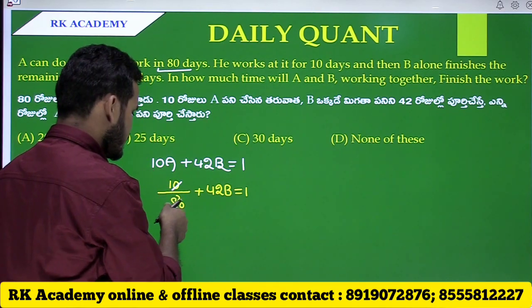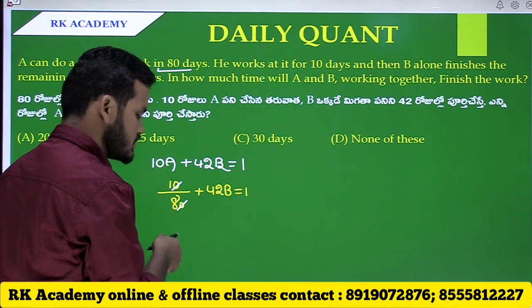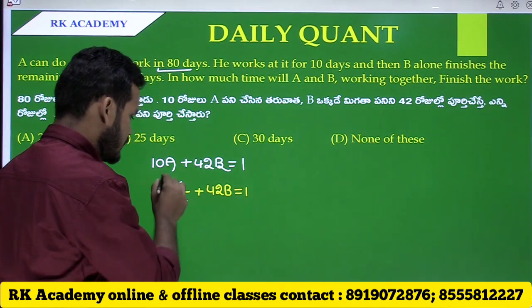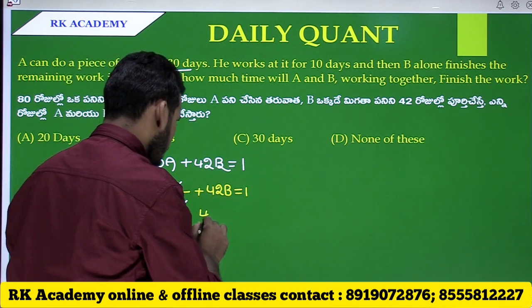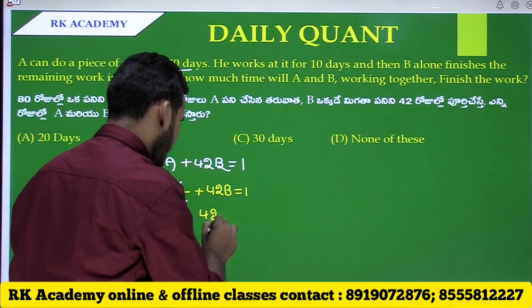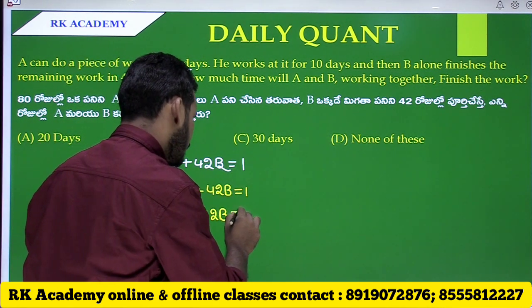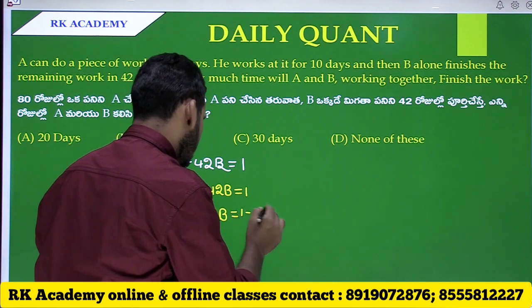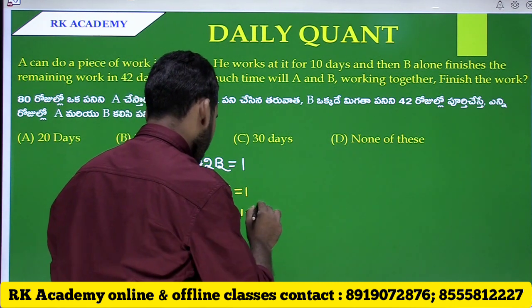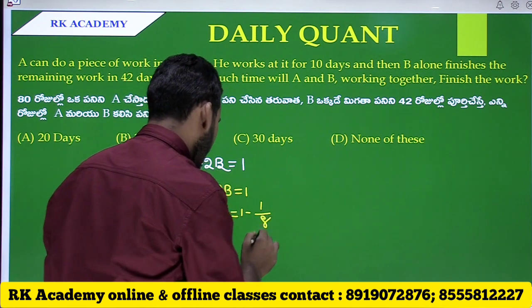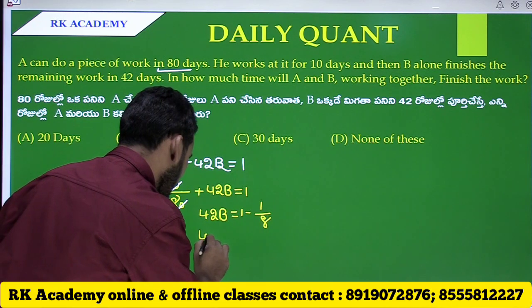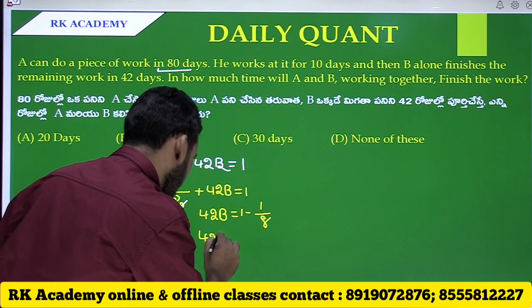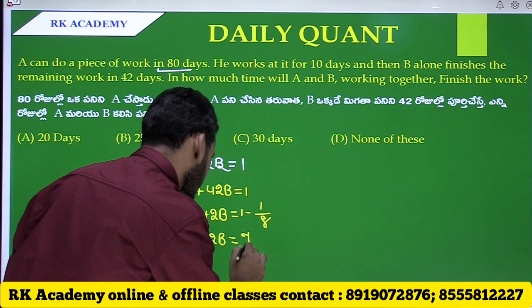Let's calculate. The total is 1. So the remaining work after A is 1 minus 1 by 8. That gives us 7 by 8.